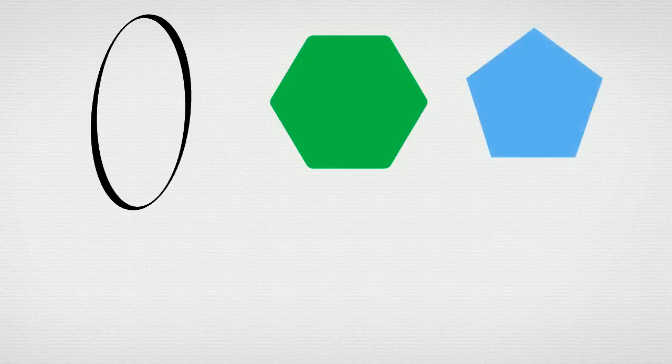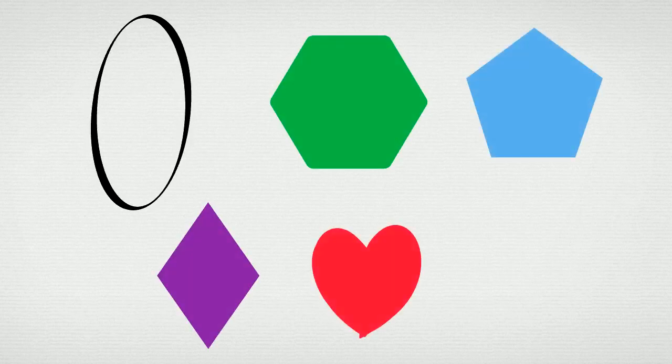And there are many other 2D shapes as well, such as the oval, the hexagon, the pentagon, the diamond, the heart, and the star.